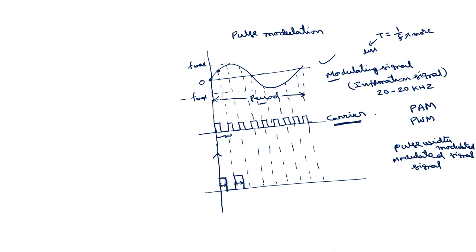This width is more because this amplitude is greater than the previous one. Still further greater amplitude gives even greater width. Here this is zero again, so we get the reference width. In the negative region, the width becomes very less. So, taking a reference at zero modulating signal value — larger magnitudes give larger widths, lower magnitudes give lower widths. This is what is called the pulse width modulated signal.